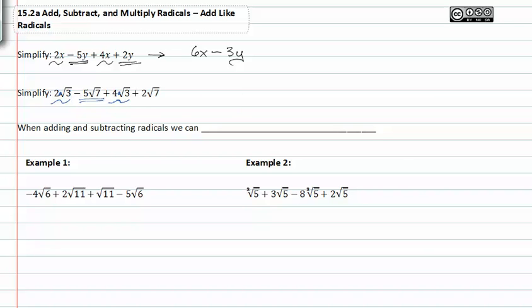Likewise with negative 5 square root of 7 and positive 2 square root of 7. Those are like terms because the index matches, and what's inside the square root matches each other. Because of this we can combine those like terms as well. Notice that it's easy to tell where they break because there's plus or minus signs in between each term.